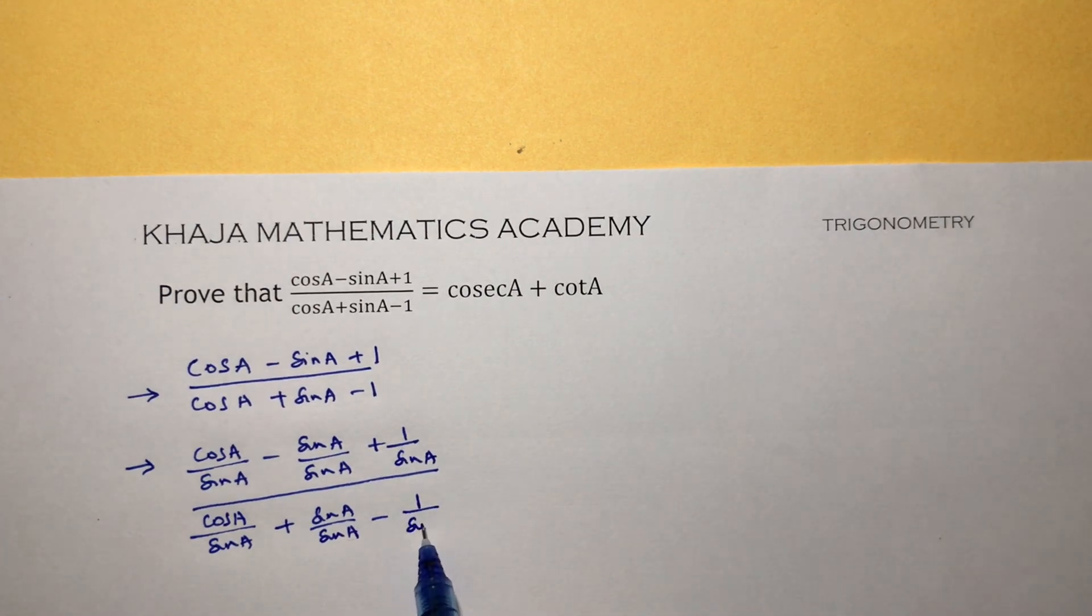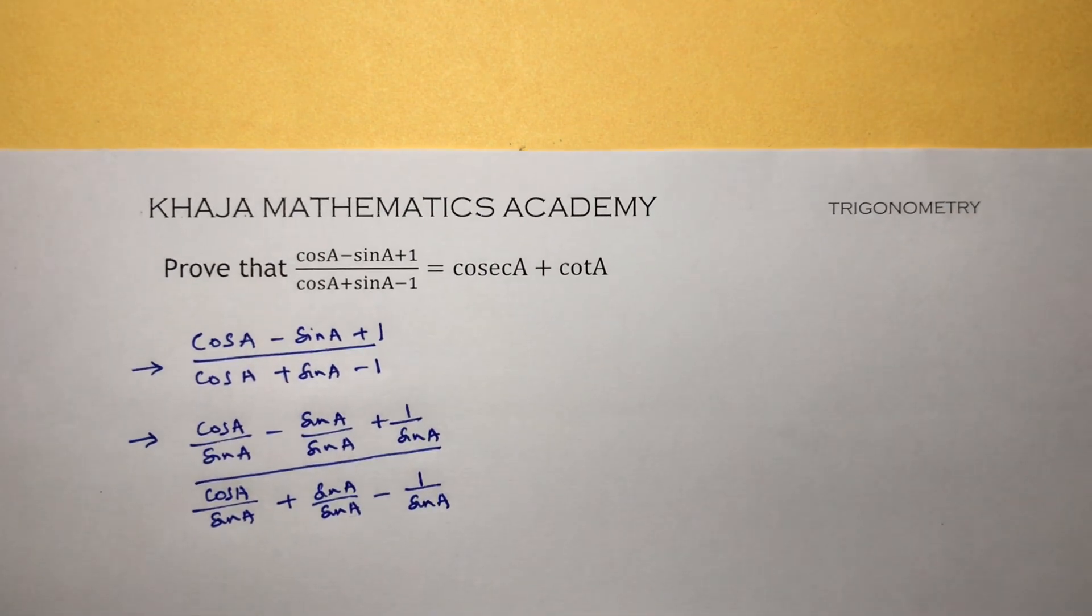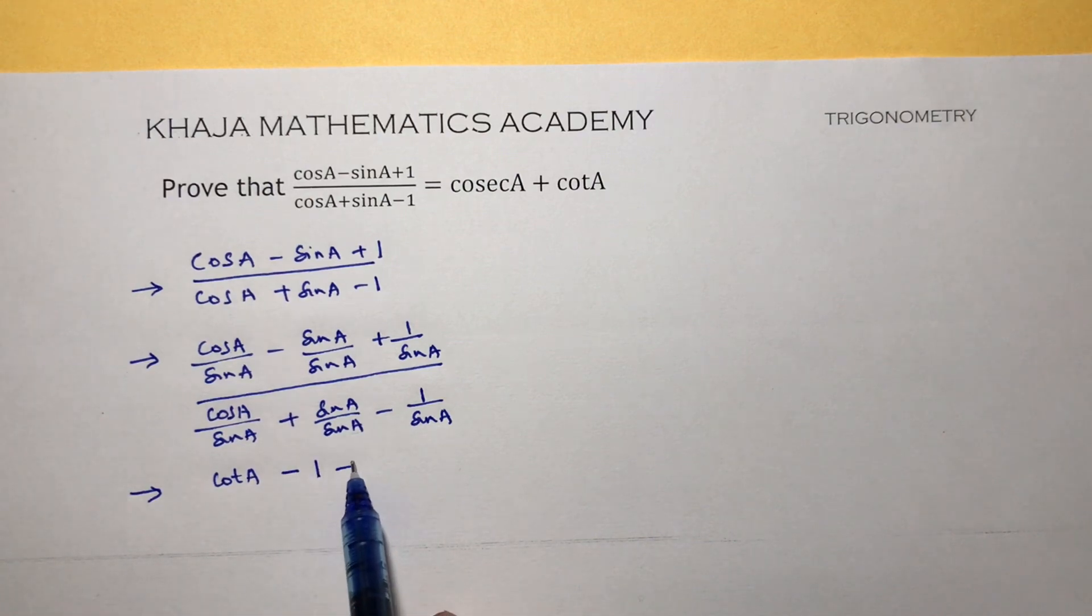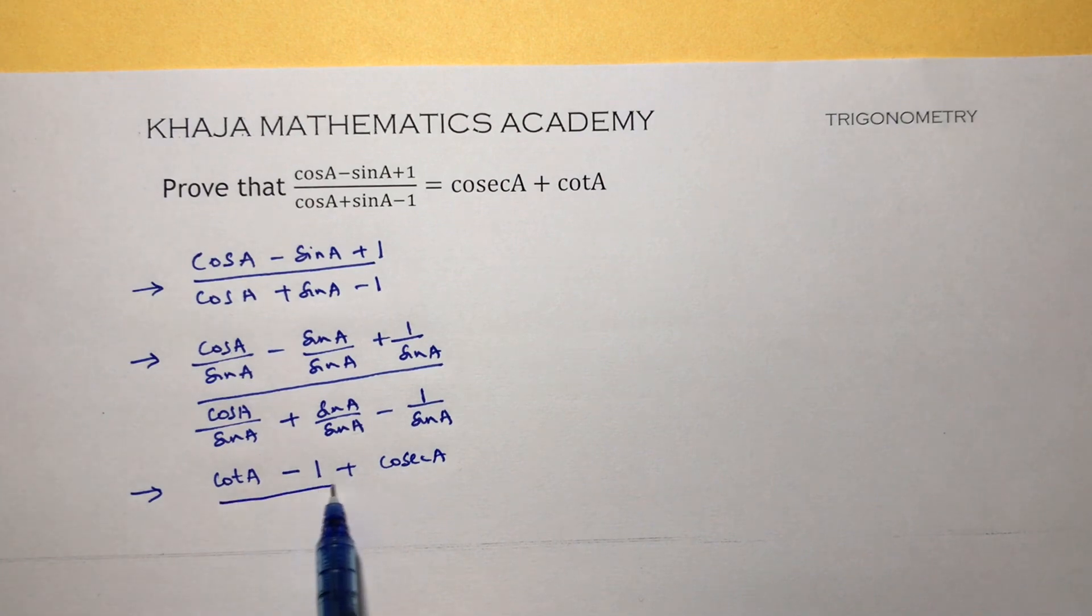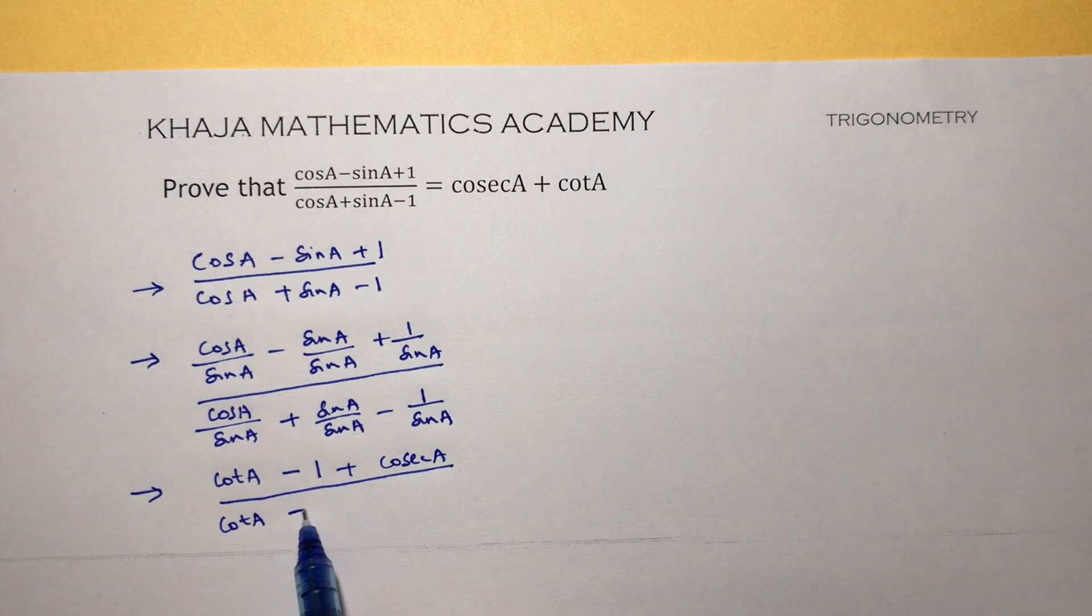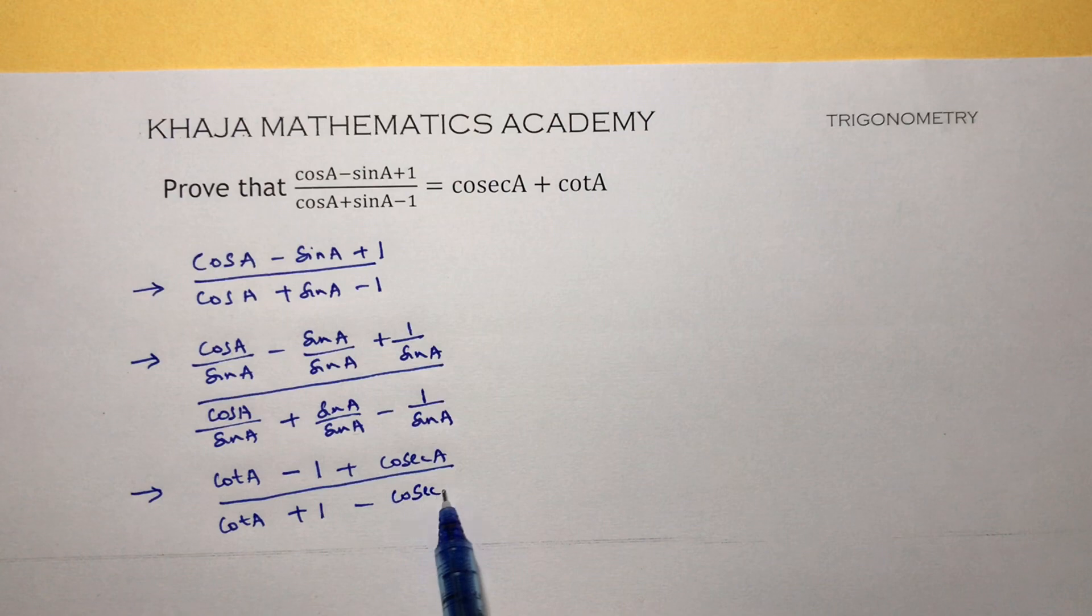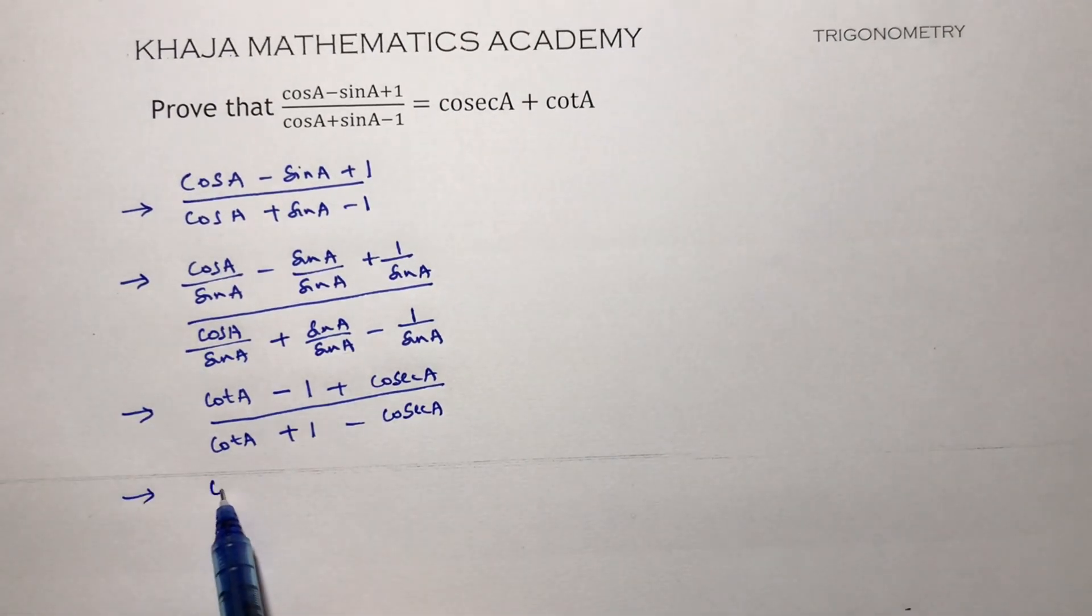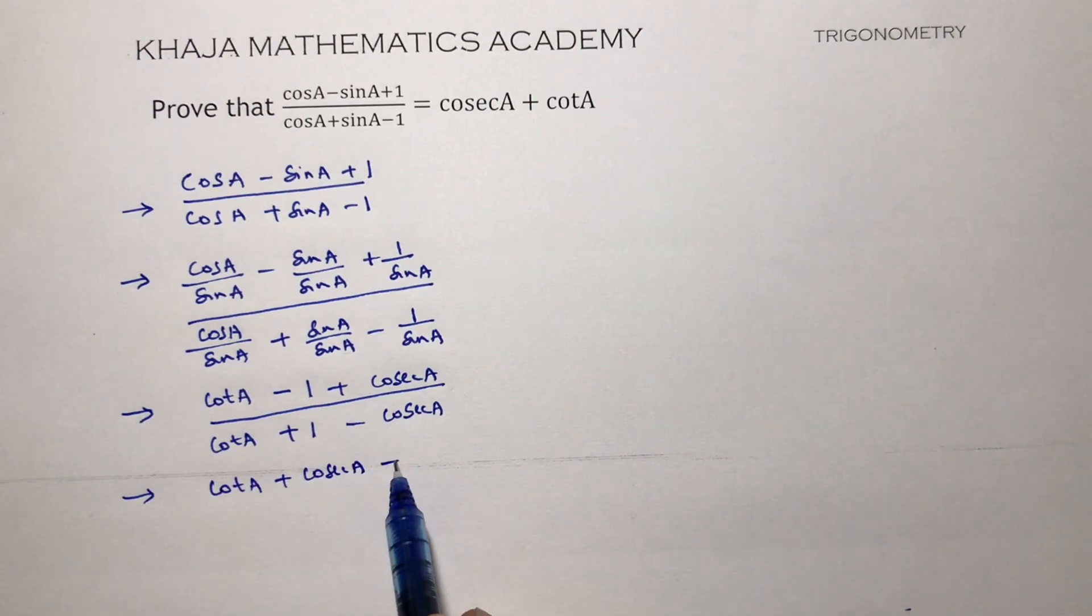Next, here you will see cos A by sin A is cot A minus 1, plus 1 by sin is cosec. Cos by sin A is cot A, plus sin by sin is 1, minus 1 by sin A is cosec. So here we'll write in order: cot A + cosec A - 1, divided by cot A - cosec A + 1.